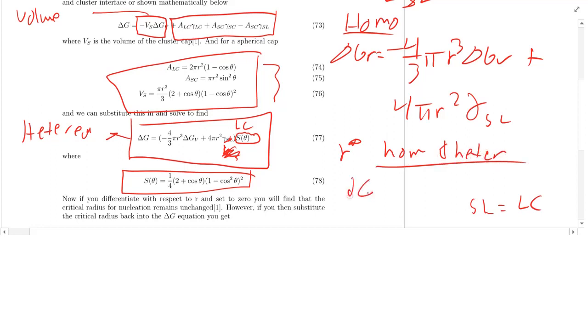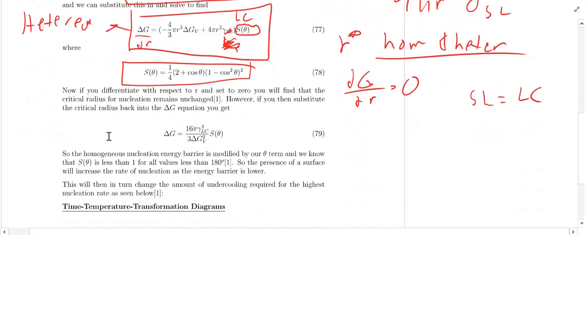Well, what we did was we took the derivative of G with respect to R and set it equal to zero. If I take the derivative of this with respect to R and set it equal to zero, and this with respect to R and set it equal to zero, am I going to get the same value? Yeah, because this is just a multiplicative factor, so we take the derivative, we set it equal to zero, this moves over and gets cancelled out immediately. So the critical radius remains unchanged, so R star is the same for homo and hetero.